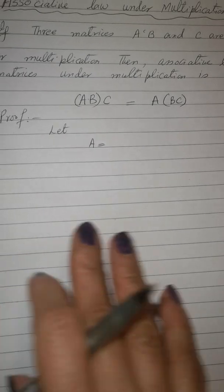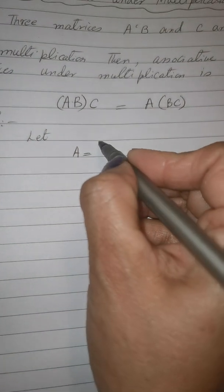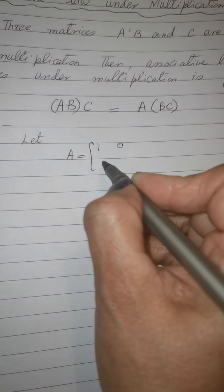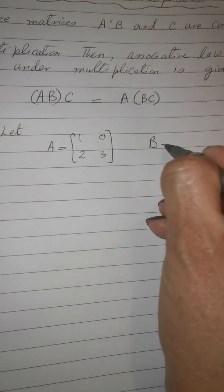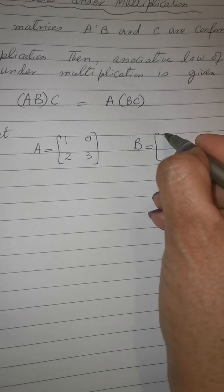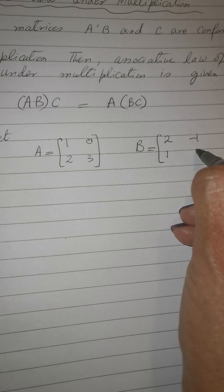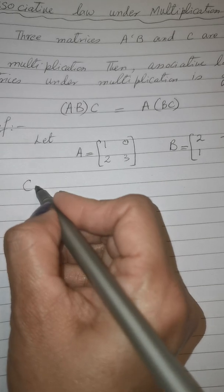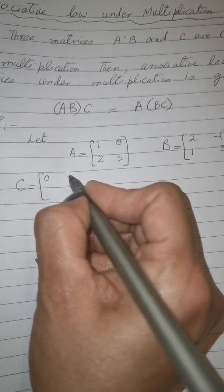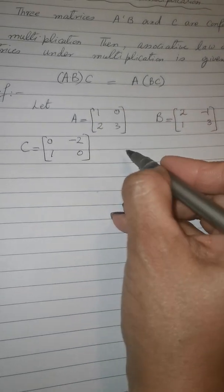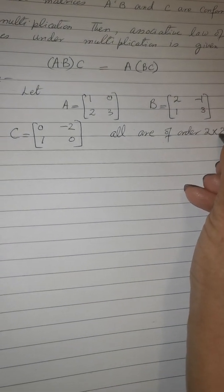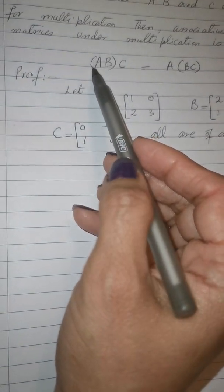To prove it, we will take any three matrices of any order. I will take matrix A with any entries, then matrix B — all matrices should be of the same order: two by two. And take C as the third matrix. I have taken these three matrices, all of order two by two, with two rows and two columns.